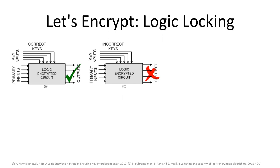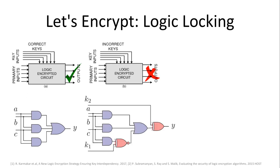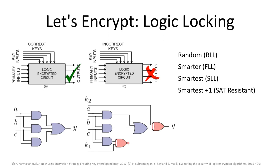The first countermeasure is logic locking — let's do it like in software and encrypt the functionality. We add some kind of key by adding key gates. If you have a netlist, you add two more gates with some key inputs, and if you don't apply the right key, the functionality is not there. There have been quite a few different approaches: first we added key gates everywhere randomly, that got broken; then a smarter fault-analysis-based method, that got broken; then strong logic locking, which got broken; then SAT-resistant logic locking, which also got broken. It's a bit of a cat-and-mouse game.